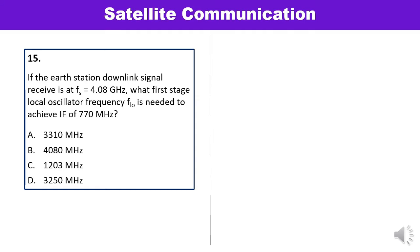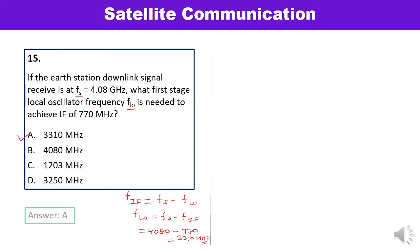Question 15: If the Earth station downlink signal is received at FS = 4.08 GHz, what first-stage local oscillator frequency FLO is needed to achieve an IF of 770 MHz? The formula is: FIF = FS − FLO, so FLO = FS − FIF. Converting: 4080 MHz − 770 MHz = 3310 MHz. Answer A is correct.